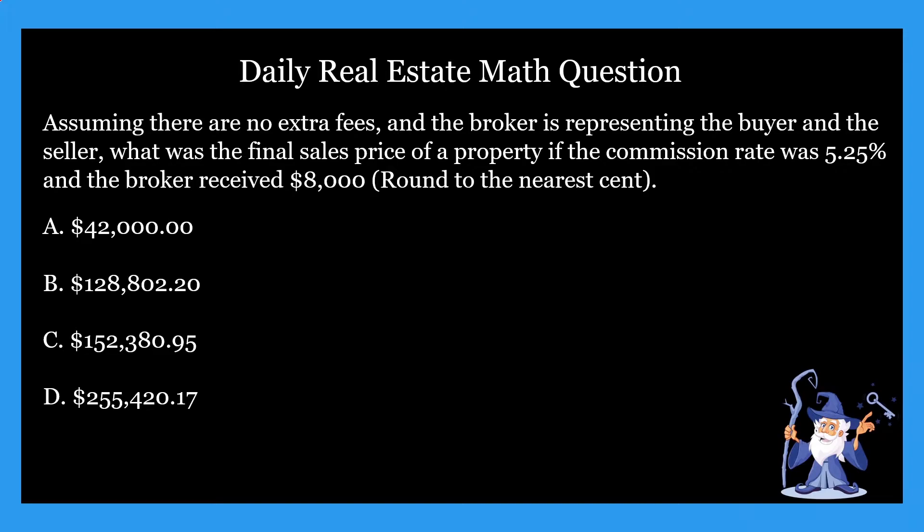All right. So the question states: assuming there are no extra fees and the broker is representing the buyer and the seller, what was the final sales price of a property if the commission rate was 5.25% and the broker received $8,000 — and it says in parentheses, round to the nearest cent. It gives us four options. Go ahead and figure it out — I'll give you an opportunity to pause here, take your time, and do that right now.